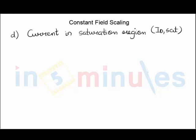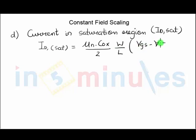Let's understand what's happening with current in the saturation region. Let's write the equation first. We know that Id in saturation region is given by transconductance mobility into oxide capacitance by 2, W by L, Vgs minus Vtn the whole square.